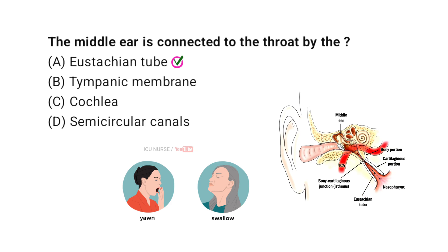By doing this, the tube helps prevent pressure buildup and protects the eardrum from damage. It also helps drain any fluid that might accumulate in the middle ear. This connection is important for proper ear function and hearing.